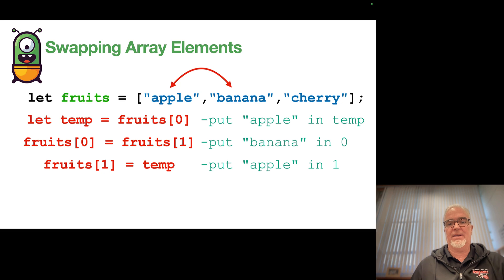So here was the breakdown of that code. The first line says put apple into the temporary variable. The next line says put banana in spot zero. So at that point in the code, both zero and one have banana in them.